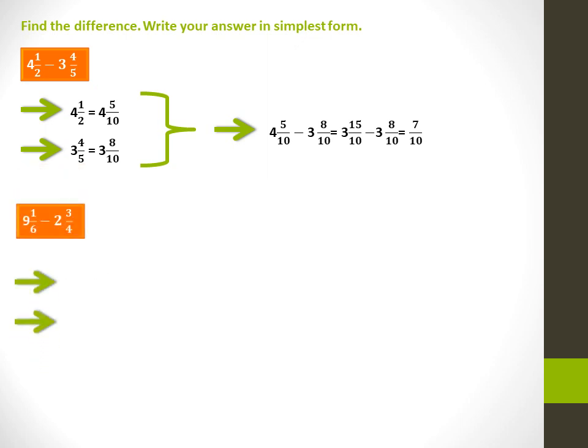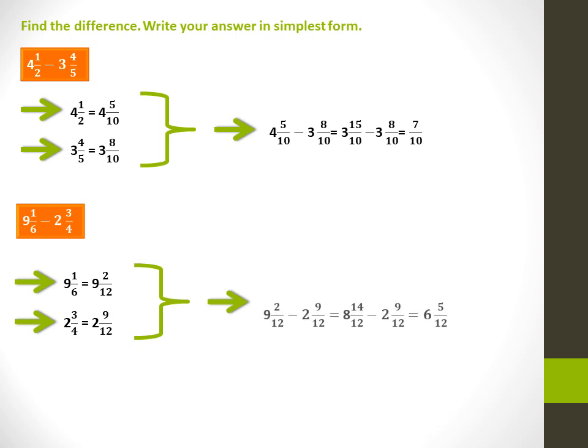9 1 over 6 minus 2 3 over 4: a common denominator is 12. 9 1 over 6 is equal to 9 2 over 12, and 2 3 over 4 is equal to 2 9 over 12. Since 9 over 12 is greater than 2 over 12, rename 9 2 over 12 as 8 14 over 12. Subtract 2 9 over 12 from 8 14 over 12. The answer is 6 5 over 12.